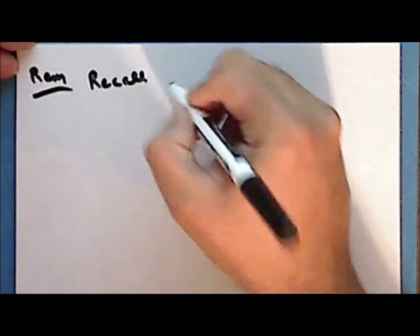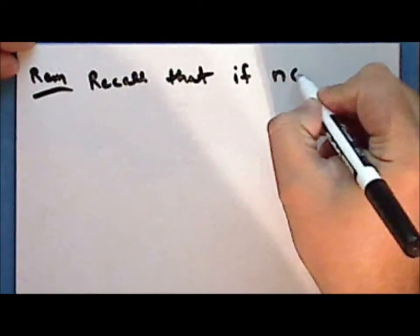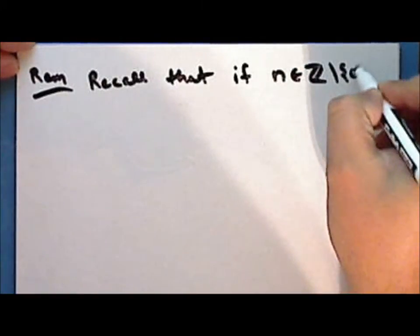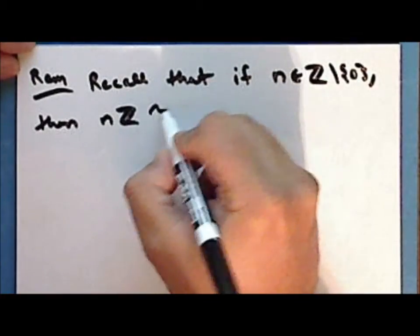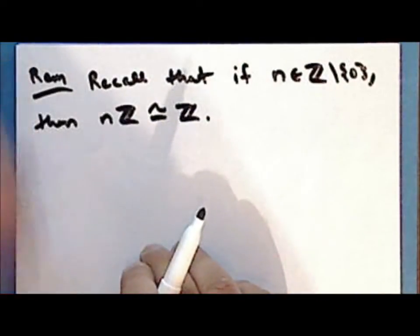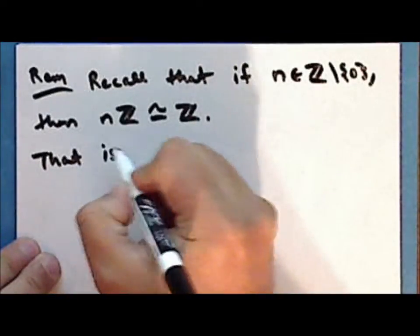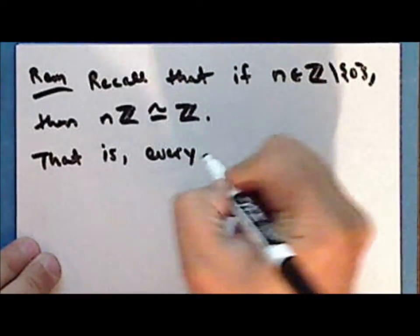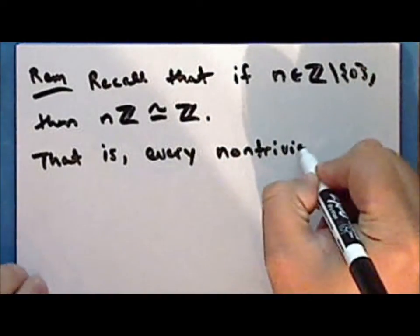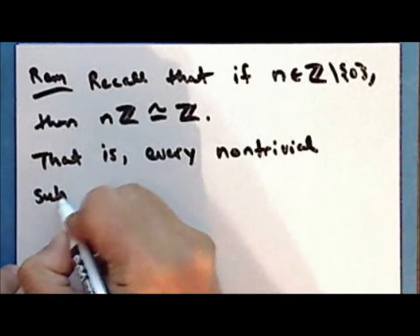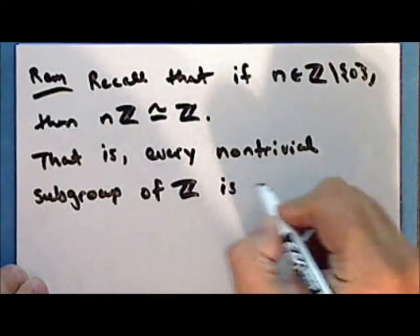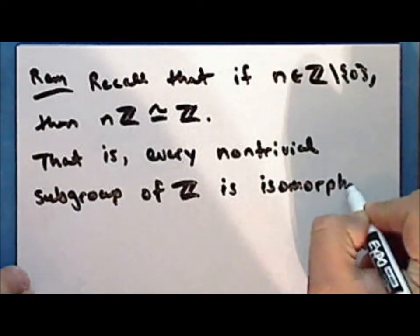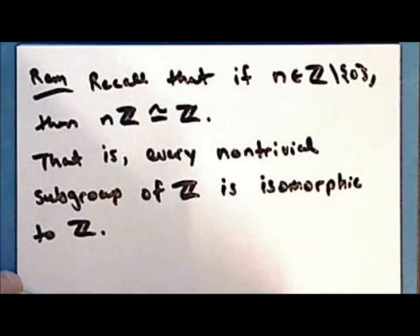Recall that if n is a non-zero integer, then the integer multiples of that non-zero integer is isomorphic to the entire group of integers under addition. That is, every non-trivial subgroup of the integers is isomorphic to the integers under addition.